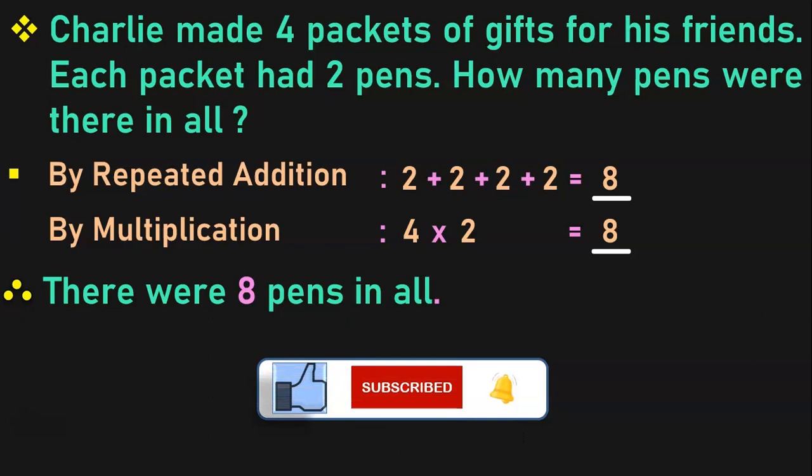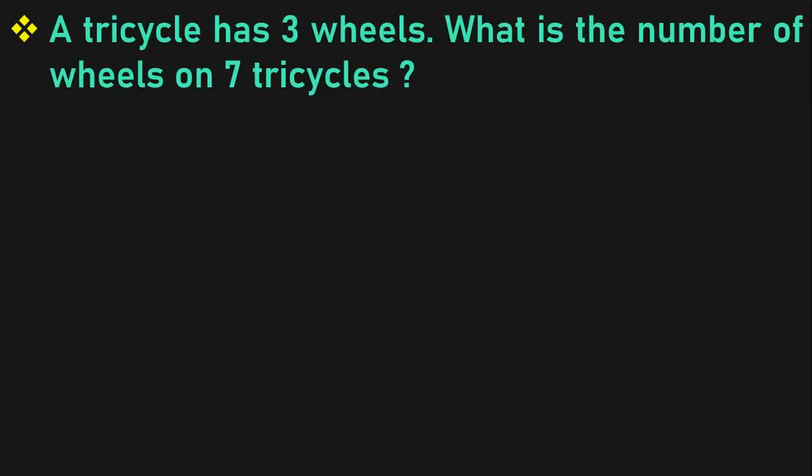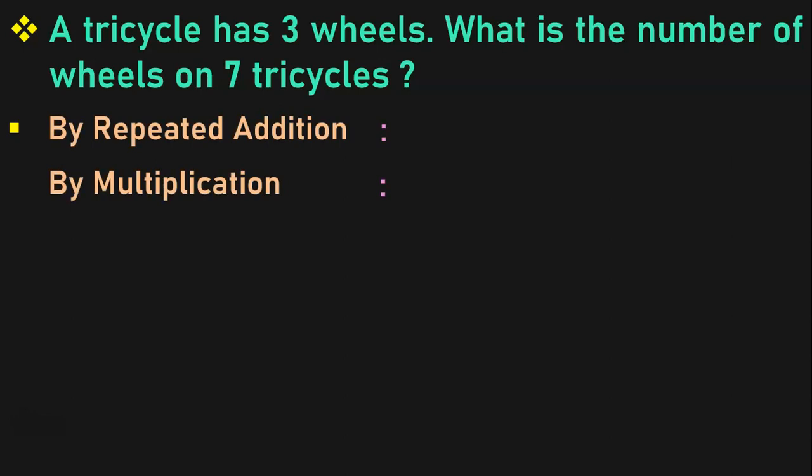Hope you found this method of doing the story sums very interesting. We are going to do many more such sums to understand this concept better. Let us do the next sum now. A tricycle has 3 wheels. What is the number of wheels on 7 tricycles? What are the 2 methods by which you are going to solve this story sum? By repeated addition and by multiplication.